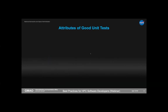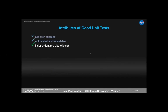What makes a good unit test? We want it to be silent on success — no print statements in unit tests. Failures should be very obvious. We want tests to be automated and repeatable: anyone can run them, anytime, and get the same results. Tests should be independent with no side effects — we should be able to run them in any order, forwards and backwards, in random order, and get the same results.